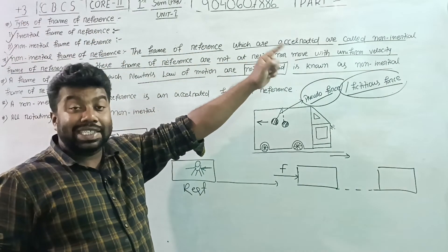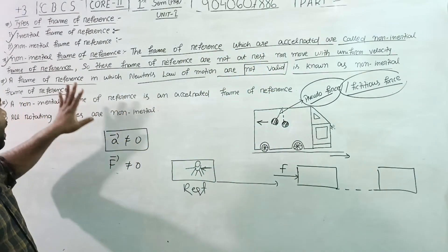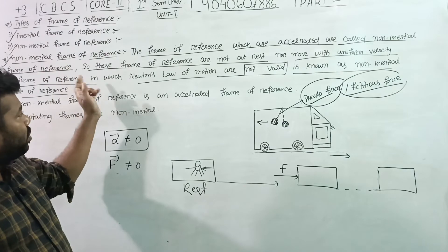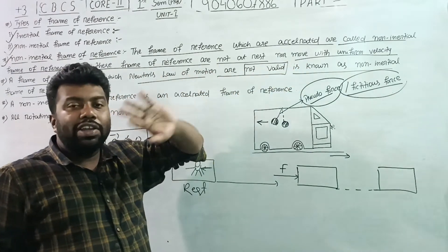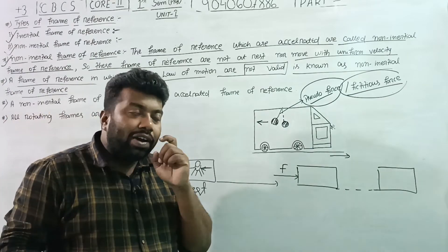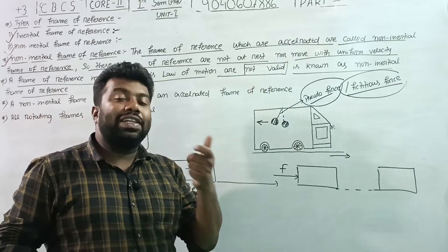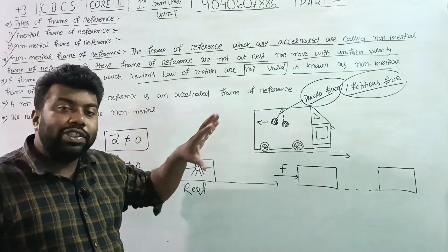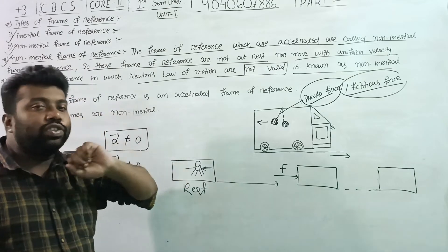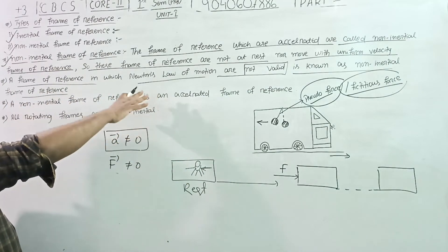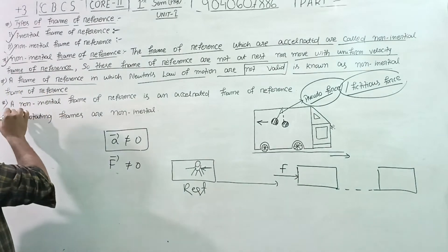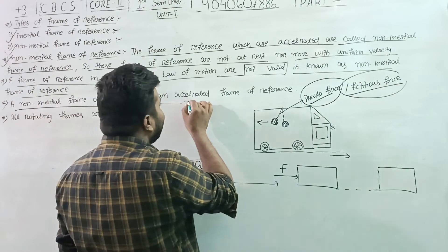The frame of reference which is a non-inertial frame of reference has acceleration not equal to zero. This frame of reference is not at rest and does not move with uniform velocity. If it were at rest, acceleration would be zero — but here acceleration is not equal to zero. Newton's laws are not valid in this non-inertial, accelerated frame of reference.